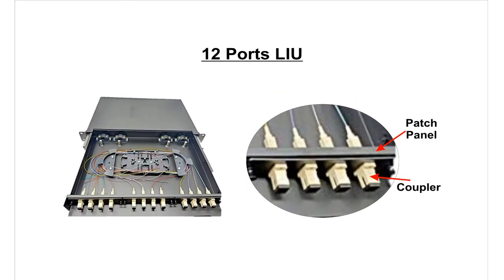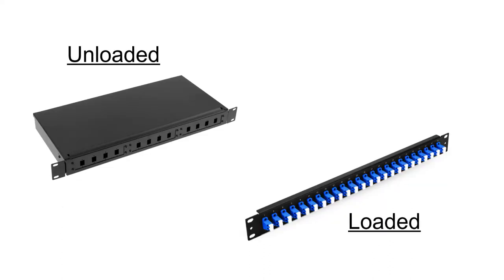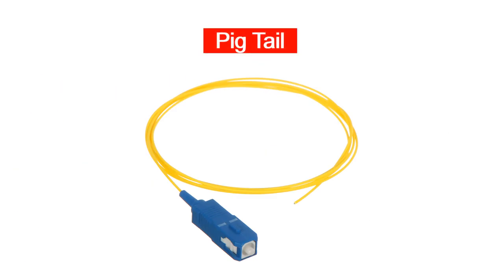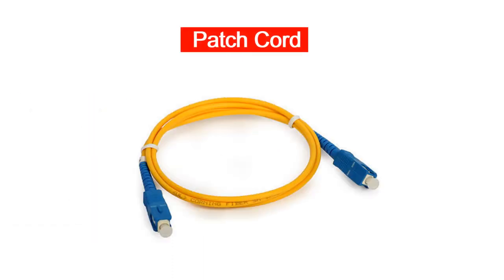Then we have the Line Interface Unit, or LIU. During fiber installation, we need to join two fibers together permanently. LIU is the enclosure which houses the spliced fibers and provides protection to the joint. The number of ports in the LIU depends upon the number of fibers used. LIU comes in various denominations like 6 ports, 12 ports, 24 ports, and so on. Inside the LIU is the patch panel on which couplers or adapters are mounted. A loaded LIU means it is ready with couplers already mounted on the patch panel. A pigtail has a connector on one end and bare fiber on the other end — this is used to make joints inside the LIU. A fiber patch cord has connectors on both ends and is required to make connections between the LIU and the media converter.